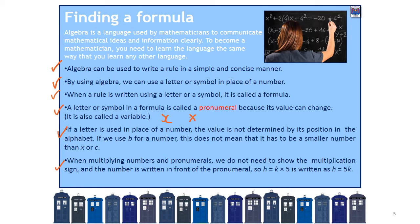When multiplying numbers and pre-numerals we do not need to show the multiplication sign — the number is written in front of the pre-numeral. For example, H equals K times 5: we don't need to write the times sign, and the 5 goes in front of the K, so we just say H equals 5K. There's no symbol between the 5 and the K, so it's understood that it's a multiply — 5 times K.